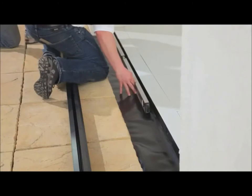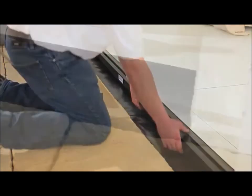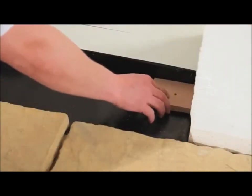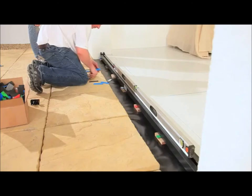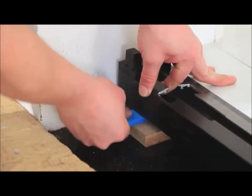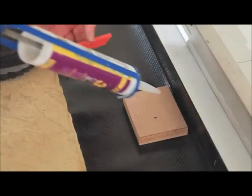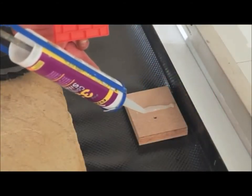It's always very important to start with a level threshold. If the threshold is not level, lay the bottom track into position and insert the correct frame packers, spaced at a maximum of 500mm apart along the length of the track until level. Once the track is level, remove and secure the frame packers into position using silicon sealant.